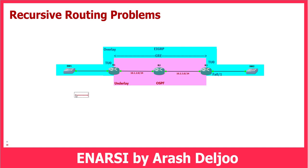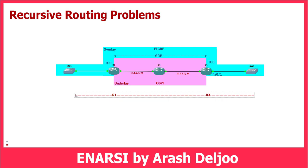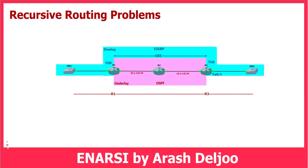We have one network connected to Router1, and here we have other networks. This GRE tunnel is connected to Router3 and then to another network. This is our overlay. On Router1, I have used 10.1.0.0/24 on FastEthernet0/1, and Tunnel0 is assigned 10.1.3.0/24.